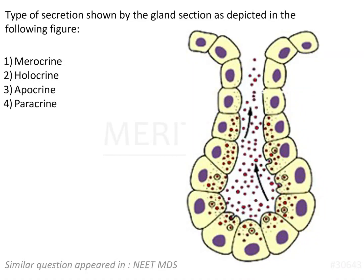The question asks about the type of secretion shown by a gland depicted in a figure. The options are merocrine, holocrine, apocrine, and paracrine. This question is based on the mode of secretion and the classification of glands based on their mode of secretion.